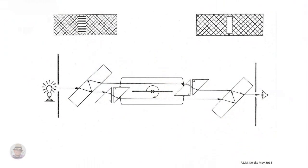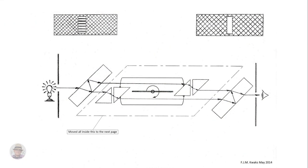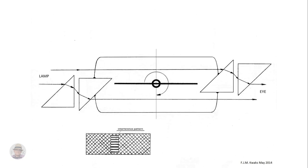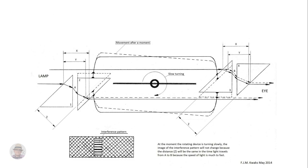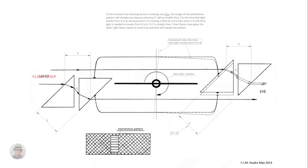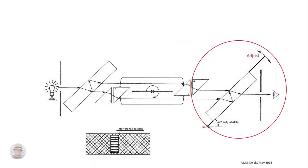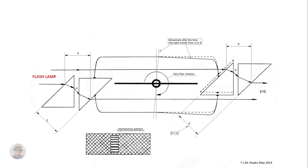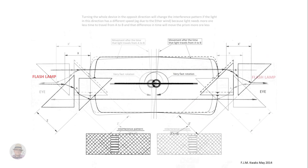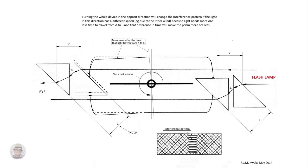A short summary of the rotating one, as it is about the same as the up and down mechanism. Slow rotation: interference pattern not moving. Fast rotation: interference pattern disappears. Re-adjust to get the interference pattern back. Turning the whole device in the opposite direction.